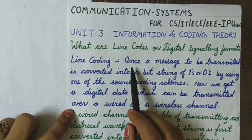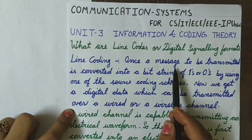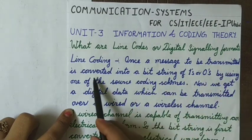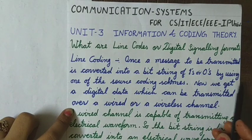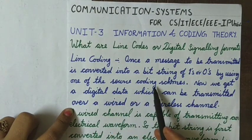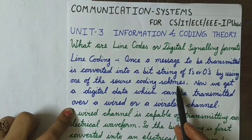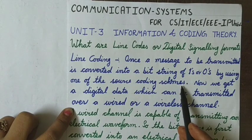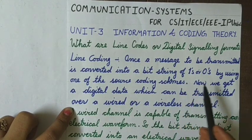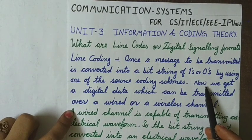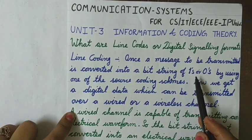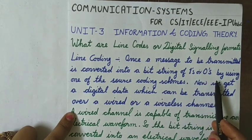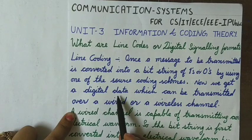Once a message which is to be transmitted is converted into a bit string of ones or zeros by using one of the source coding schemes — which can be the Shannon-Fano coding or the Huffman coding, to be discussed in another session — we get the codeword. The message is now in the form of binary data, ones and zeros, and this is called digital data.